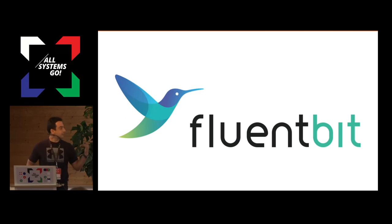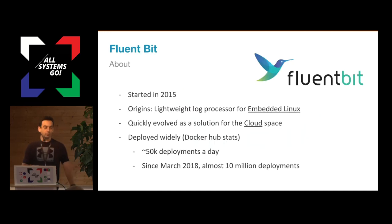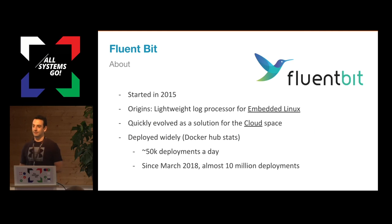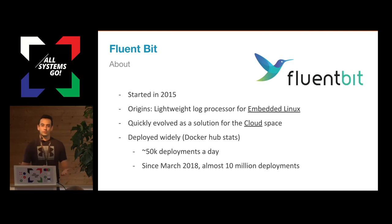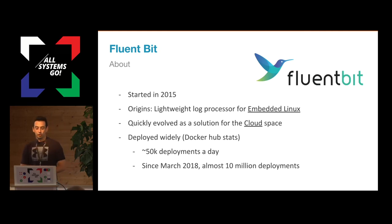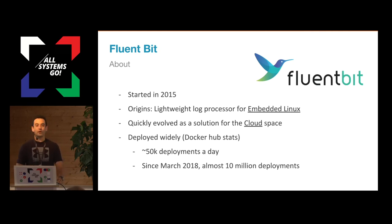With that said, I'd like to introduce FluentBit. FluentBit is a child project of FluentD, born in 2015 — about three years ago — and it was created originally for embedded Linux. At TreasureData, we created FluentD years ago, made it open source, and FluentD is really good. But sometimes people complain that it needs around 40 megabytes of memory to run because it's a mix of Ruby with C, and it's not quite lightweight if you want to run it in an embedded Linux system.